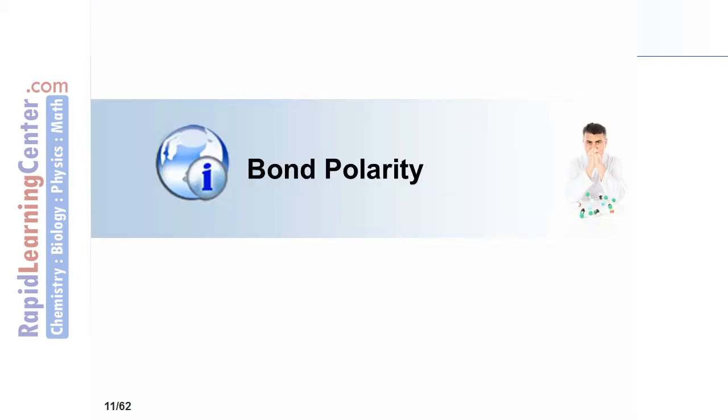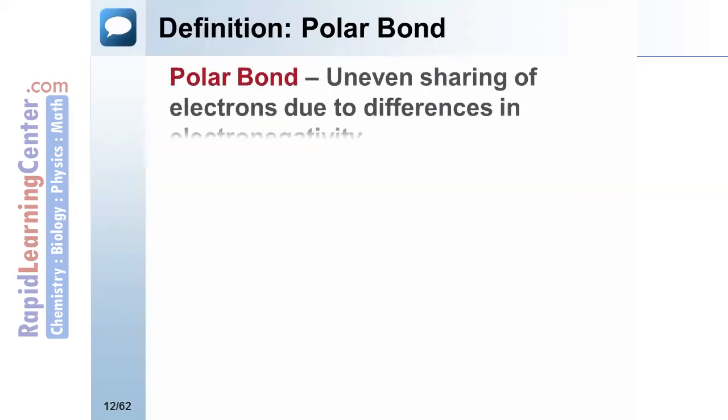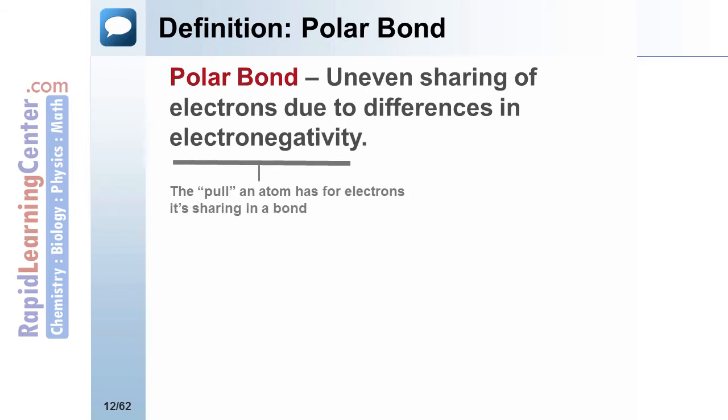How is bond polarity determined? A polar bond is an uneven sharing of electrons. Electrons are pulled more towards the more electronegative atom. Electronegativity is the pull an atom has for electrons it's sharing in a bond.